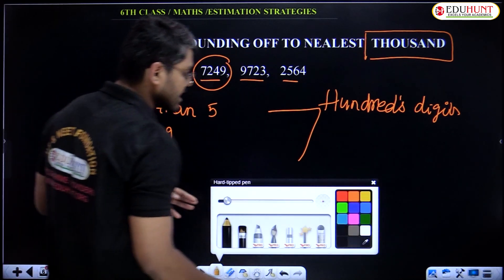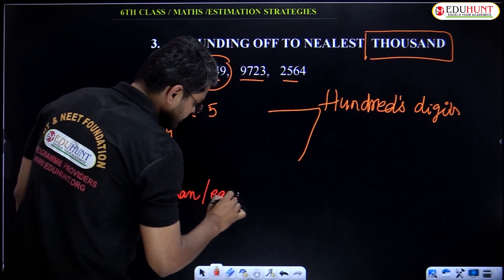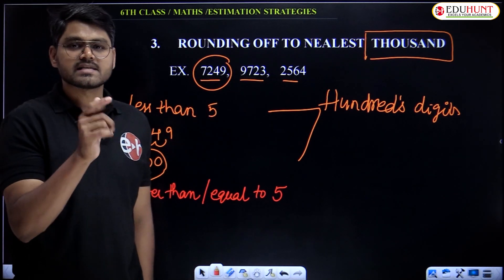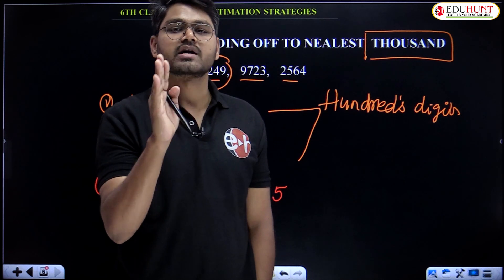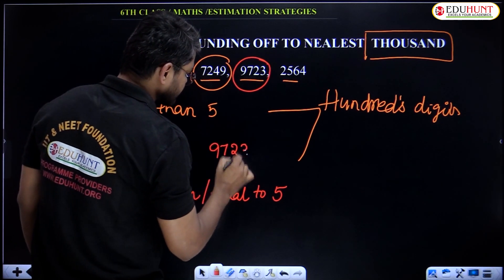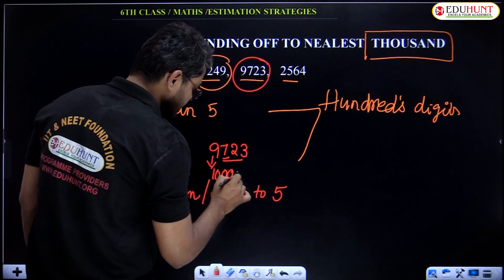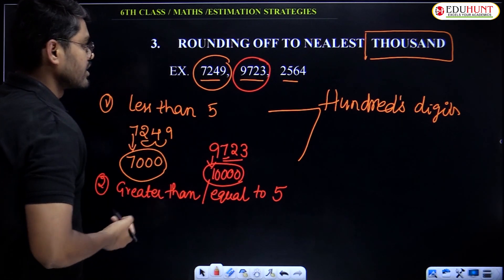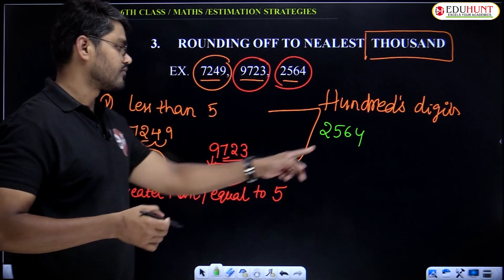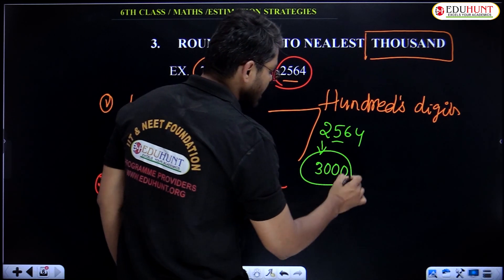Second point: if the hundreds digit is greater than or equal to 5, add 1 to the thousands digit and remaining digits should be 0s. Take 9723. The hundreds digit is 7, which is greater than 5. Add 1 to 9: 9 plus 1 equals 10, remaining three digits are 0s. Answer: 10,000. Take 2564. The hundreds digit is 5, equal to 5. Add 1 to 2: that is 3, remaining digits are 0s. Answer: 3000.